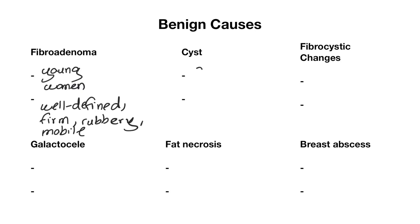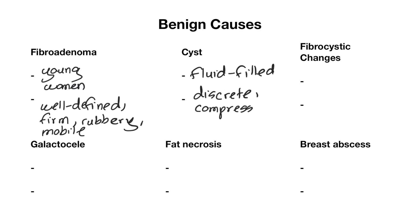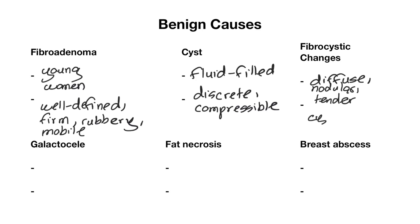Cysts are fluid-filled masses that are often discrete and compressible. Fibrocystic changes usually do not have a localized, well-defined mass — it's usually more diffuse, nodular, or lumpy breast tissue that's bilateral. It can be tender, and the tenderness is often cyclic, associated with the menstrual cycle. It can also increase in size during that time as well.